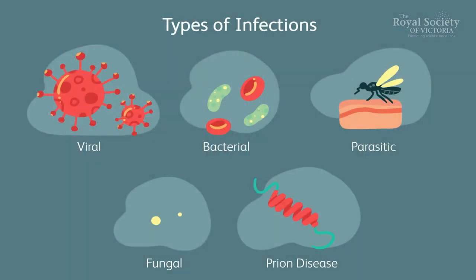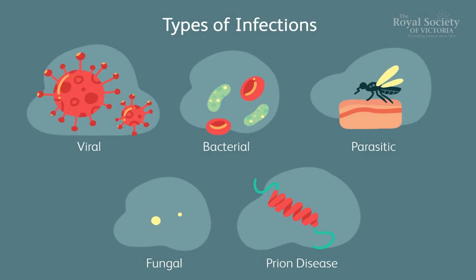These are the types of infections you can see in this modern world: viral, bacterial, fungal, and prion diseases. I don't think I need to give an introduction to viral diseases, because we've already experienced the COVID pandemic. Bacterial diseases are caused by bacteria, fungal by fungus, and prion diseases by prions. My major concern here is parasitic disease — specifically, I'm going to talk about Leishmaniasis.